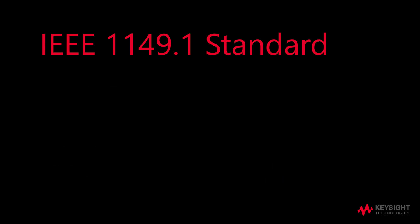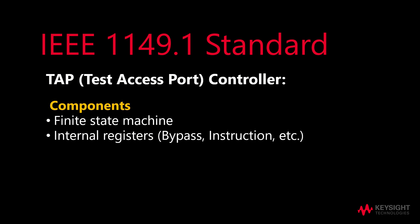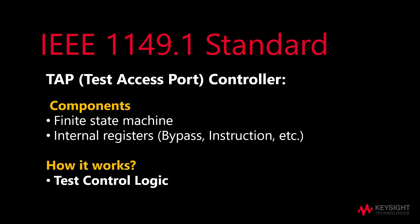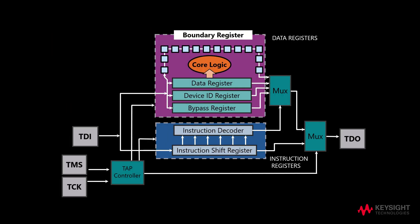According to IEEE 1149.1 standard, the Test Access Port controller, or the TAP controller, acts as the brain. The components of the TAP controller include both the finite state machine and a few internal registers. The TAP controller works by utilizing a test control logic. By controlling and observing what happens at the input TDI and the output TDO, the Boundary Scan technique can help to check if the connectivity of nodes is correct.